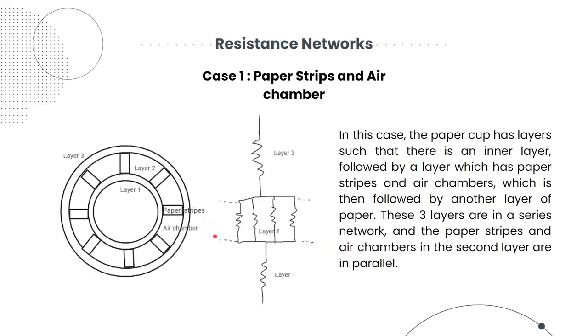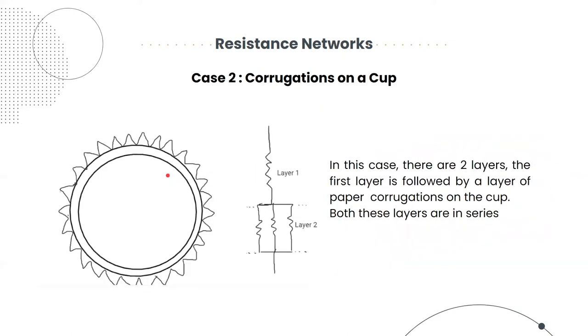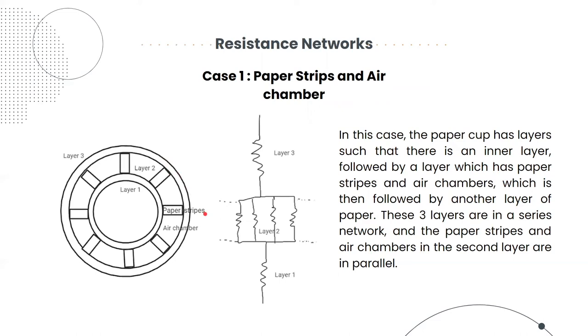Case 1. In the first case, we consider a three-layered system. The innermost layer is made of paper. The second layer has alternating air chambers and vertical paper strips. The purpose of taking strips is to connect the other two layers, and the purpose of taking air chambers is to decrease the thermal conductivity configuration by introducing them. Also, the outermost layer is made up of paper. As for the resistance network, since the heat flows radially outwards dominantly, the three layers will be in series with each other. Also, the air chambers and the vertical air strips will be parallel to each other.